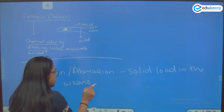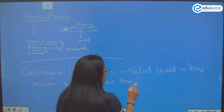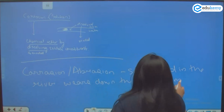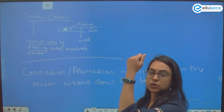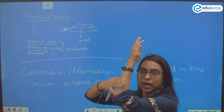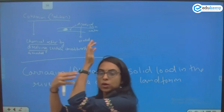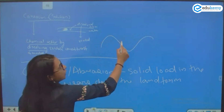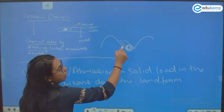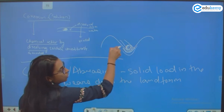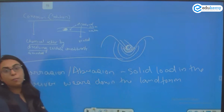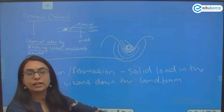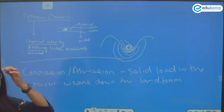In corrasion, the river bears down on other rocks. If there is abrasion going on, a rock or any landform can be eroded by physically wearing it down. That physical wearing down of a landform is called corrasion or abrasion.